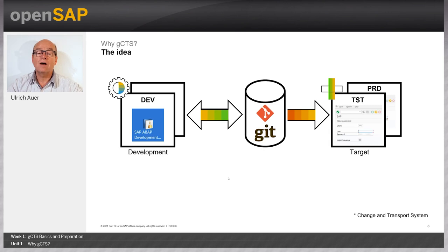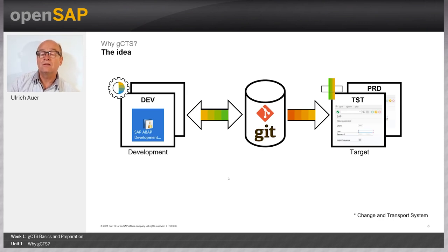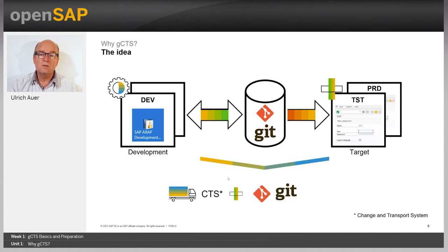The new world of ABAP development will look like this: the Git repository is the new center of the world. Developers use the development system like editors to commit changes, and everything you need in another system will be pulled from the Git repository. Combining CTS with a Git repository makes the GCTS.